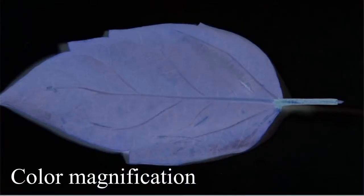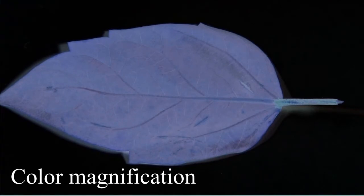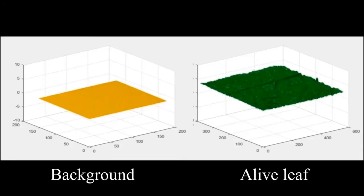As shown, the live leaf colors show observable changes. The color of the live leaf oscillates in a noticeable manner compared with the color of the background.